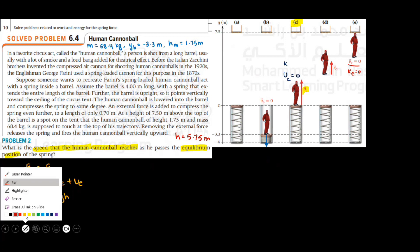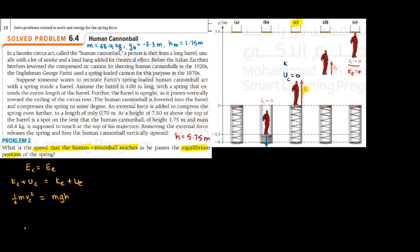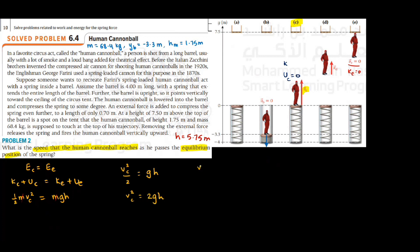Let us rearrange. We can cancel m from both sides, giving vC²/2 equals g·h, so vC² equals 2gh, and v equals the square root of 2gh. Substituting: v equals the square root of 2 times 9.81 times 5.75, which gives a value of v as 10.6 meters per second.